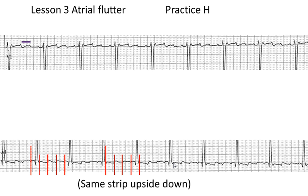We want to remember that flutter waves continue under T waves and under QRSs. The atrial flutter waves are occurring in the atria and have nothing to do with the QRSs and the Ts — they're going to be landing on top of each other. There are two things happening simultaneously here.